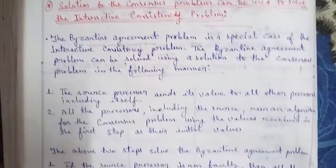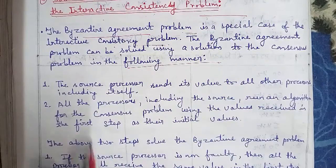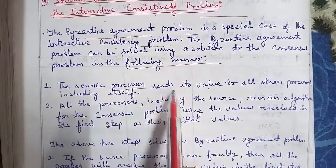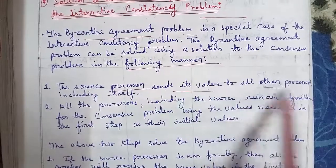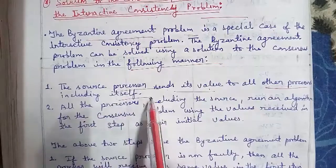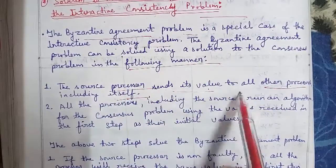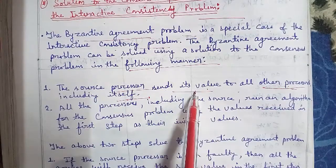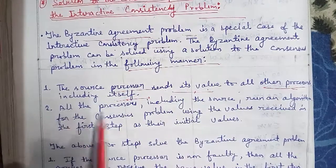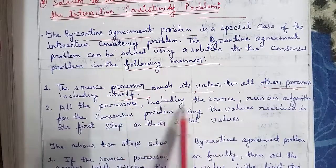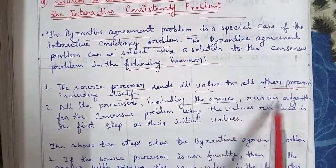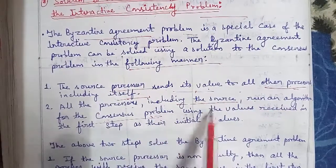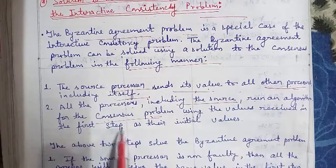The first step is that the source processor sends its value to all the other processes, including itself. Then all the processes, including the source, run an algorithm for the consensus problem.